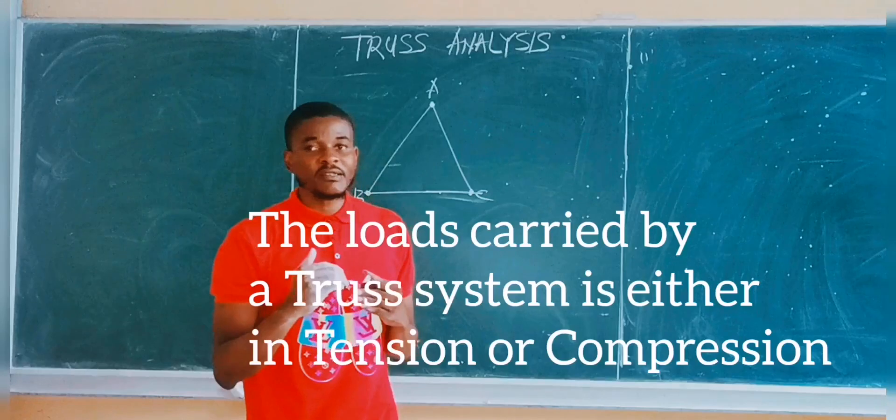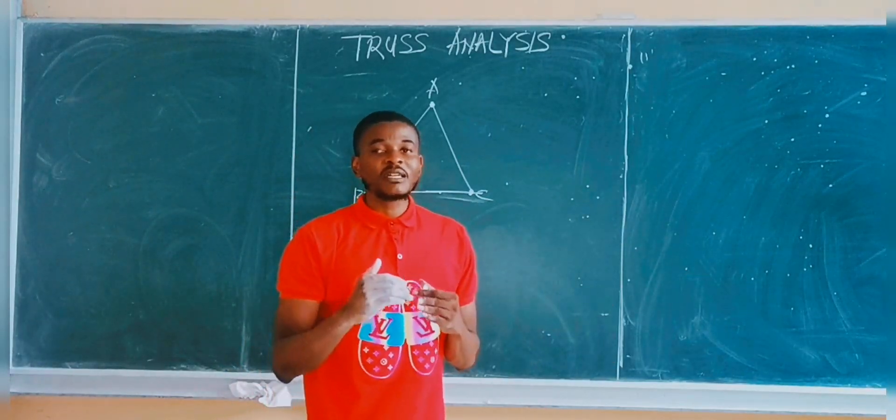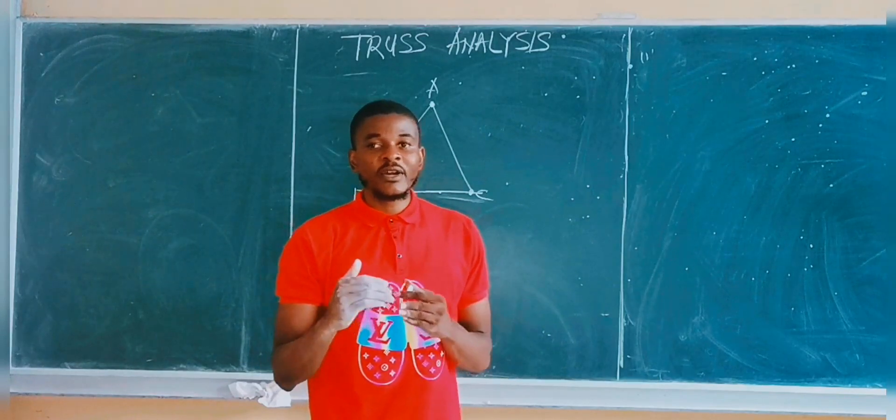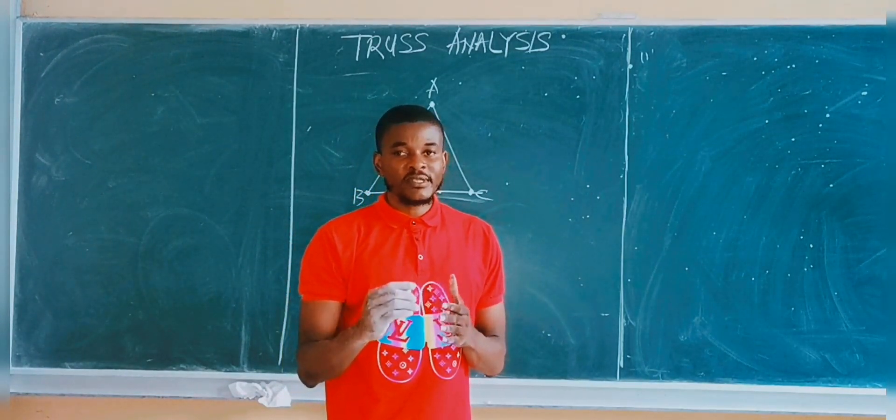The load carried by a member of a truss system is either in compression or tension. And these loads are equal and opposite in direction.